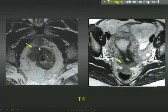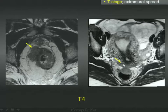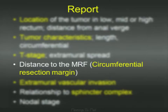Here is frank T4 disease — in this case extending into the prostate, involving adjacent pelvic organs. Here is another patient where the tumor is extending into the vagina. Involvement of adjacent pelvic organs falls into the T4 disease category.